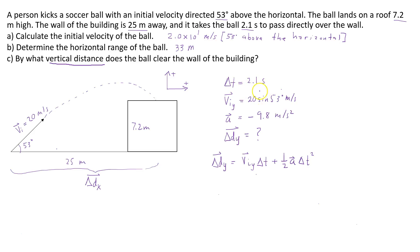Now I'm going to substitute in the values that I know. The initial vertical velocity is 20 sine 53 times delta t. Actually, delta t I know as well.